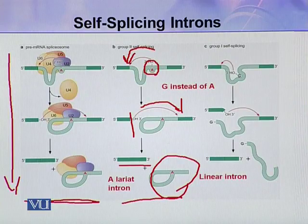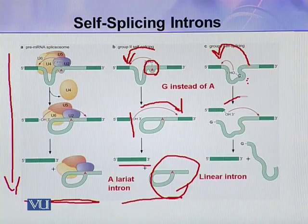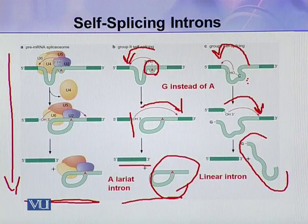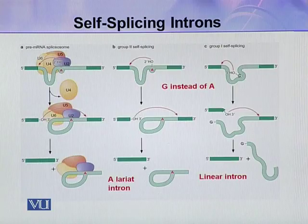In the case of group 1 self-splicing, A is not used — instead G is used in its place. G attacks the 5' splice site, then the freed 5' end attacks the 3' splice site. In this way, a linear intron (not a lariat) is released and the two exons are joined. This figure shows a comparison of all three splicing mechanisms.